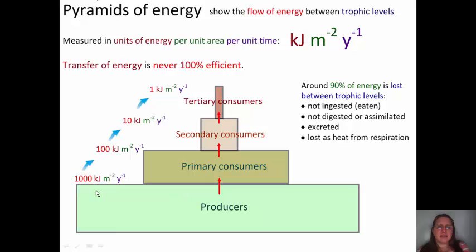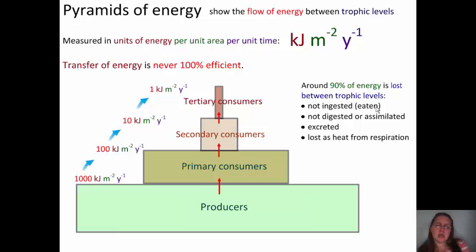If you start with 1,000 kilojoules per meter squared per year, only 10% of the energy goes up to the next level — that would be 100 kilojoules per meter squared per year. Again, only 10% goes up to the next level, so from 100 to 10, and then from 10 to 1. Because 90% of energy is lost, only 10% of energy can go to the next trophic level. We'll do some work with energy pyramids next week so you can see exactly what you need to consider when drawing them.